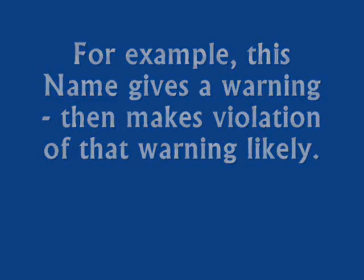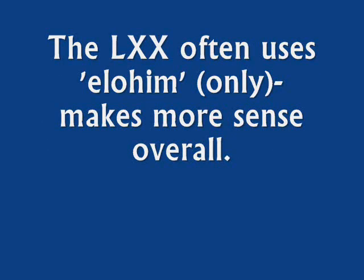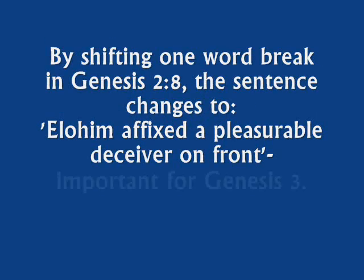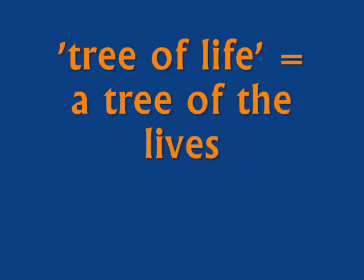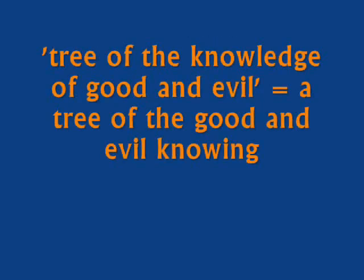In verse 8, according to the Septuagint, Elohim planted a garden called Eden, which means pleasures, and placed there the human whom he — higher deity — had been forming. And Elohim made trees sprout from the ground, including a tree of the lives, etz ha-chaim, and a tree of the knowing of good and evil. These trees are very important symbols, and what they actually are, many of us encounter every day.